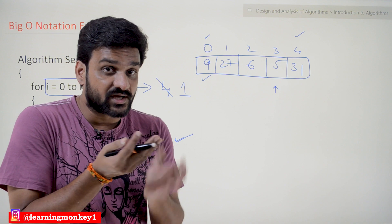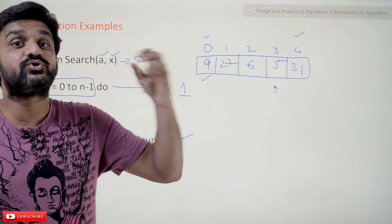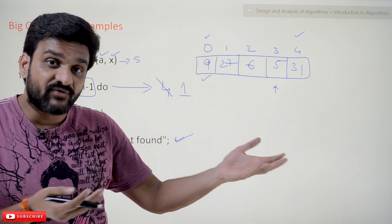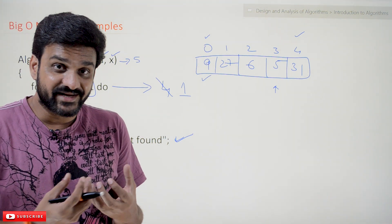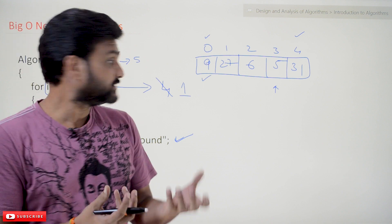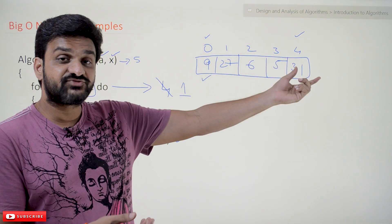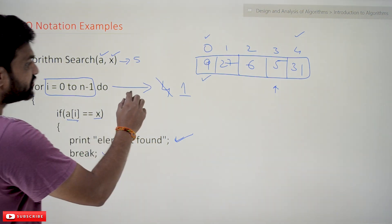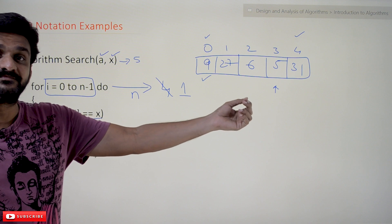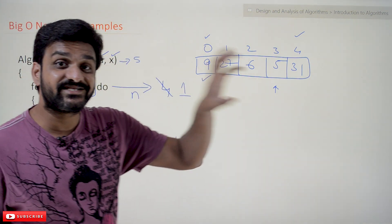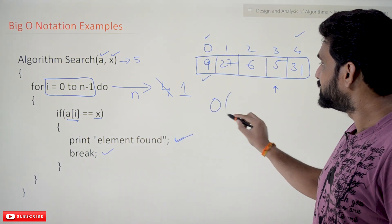The number of times the lines in the algorithm are getting executed is changing from input to input. If you change the input, the number of times the lines are getting executed is changing. Try to get that point — this is the main essence of this entire video. It is changing. For example, if you are trying to search for 31, this loop is going to iterate for n number of times. How to notate this behavior? We have to notate this by using Big O of n.